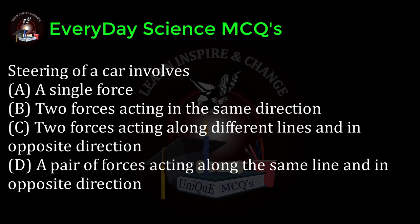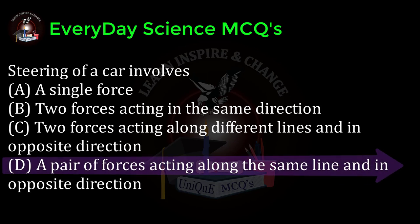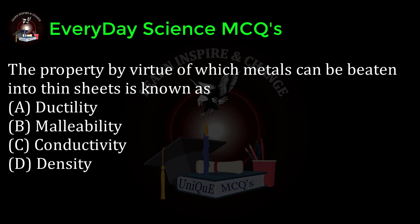Steering of a car involves: a) a single force, b) two forces acting in the same direction, c) two forces acting along different lines and in opposite directions, d) a pair of forces acting along the same line and in opposite directions. Correct answer: d.